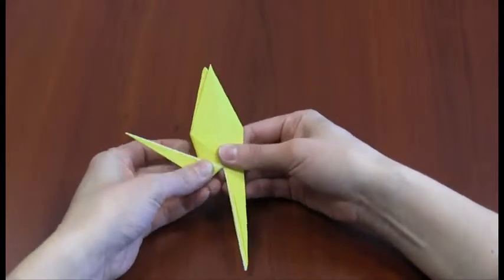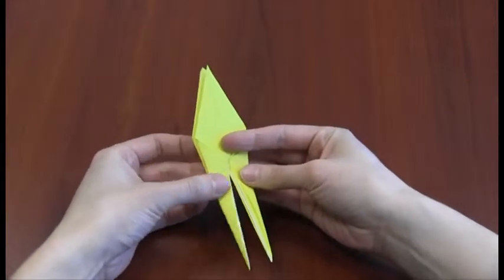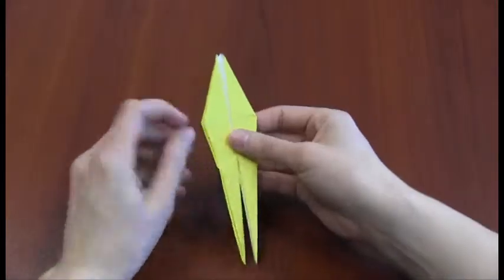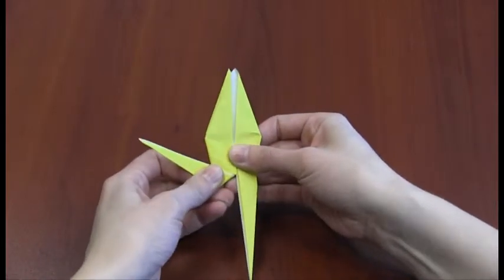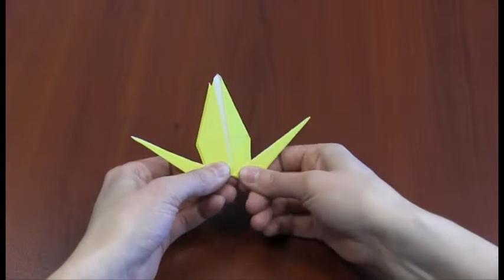Fold the left and right legs of your shape up and outward at an angle. Then unfold what you just did. Turn your shape around and repeat the same steps, folding and unfolding. Again, you're just making creases to make the next step easier.